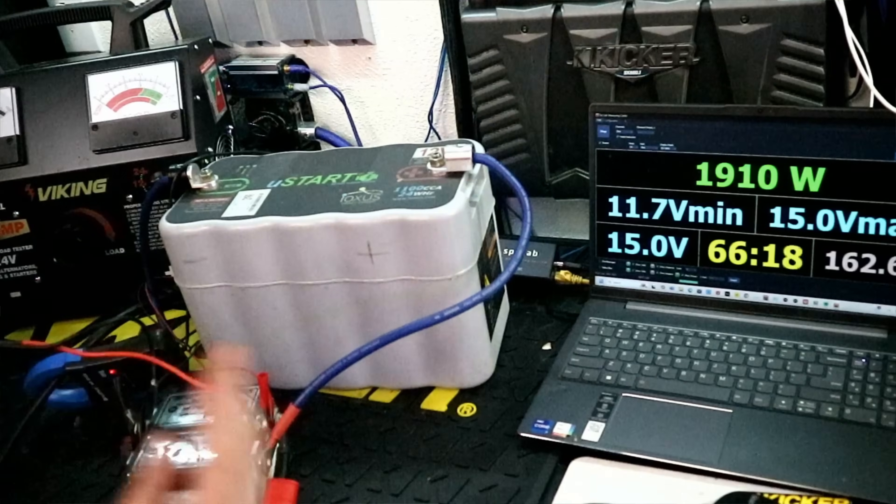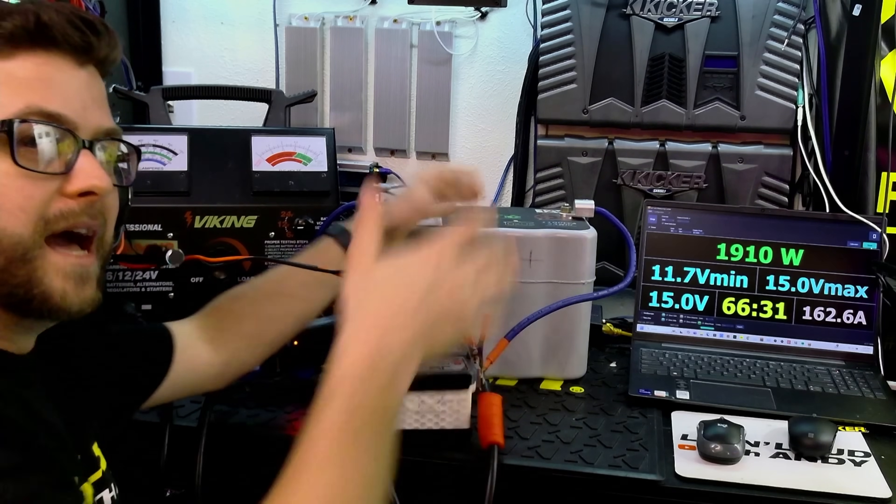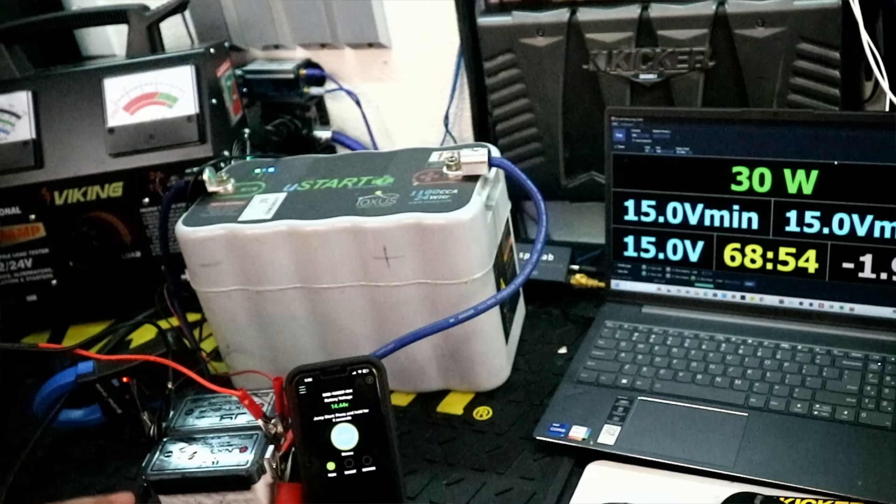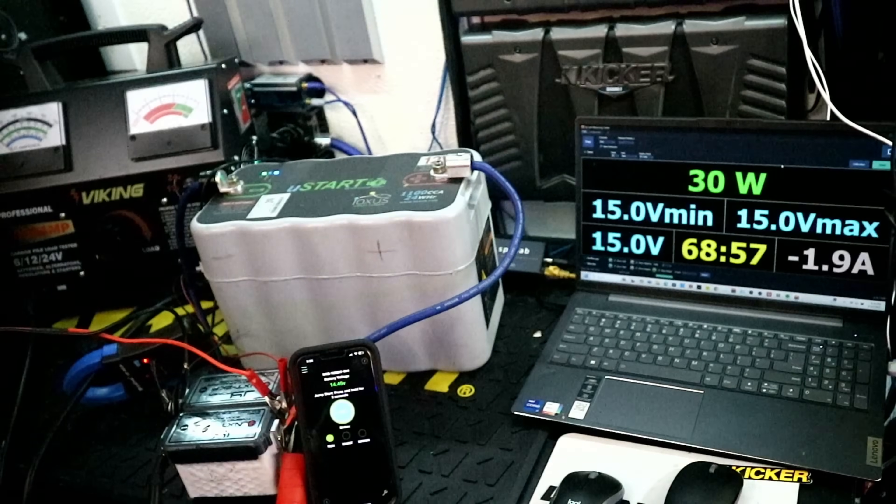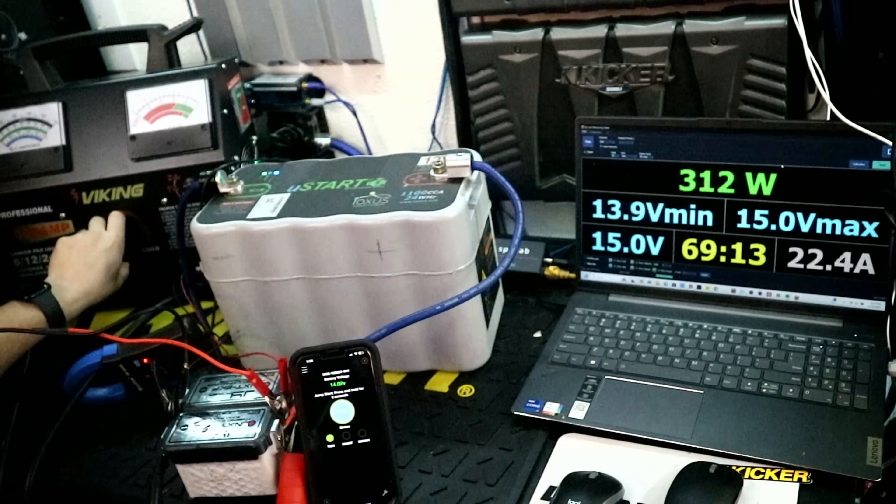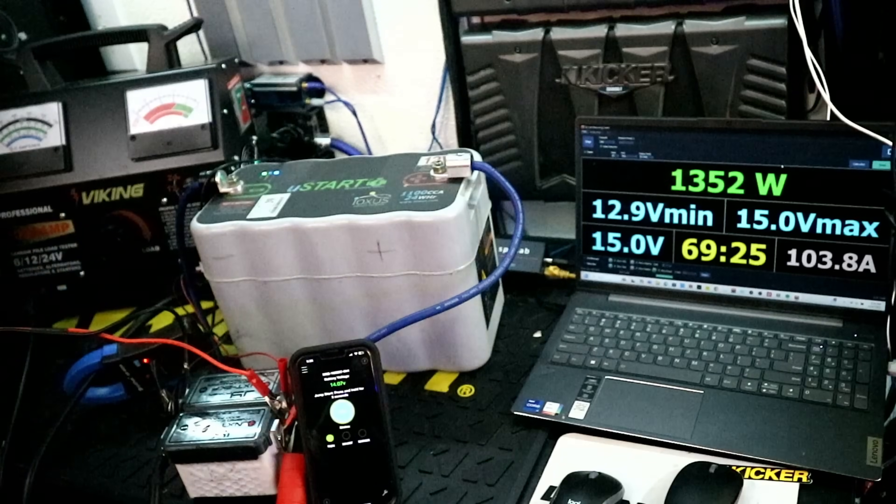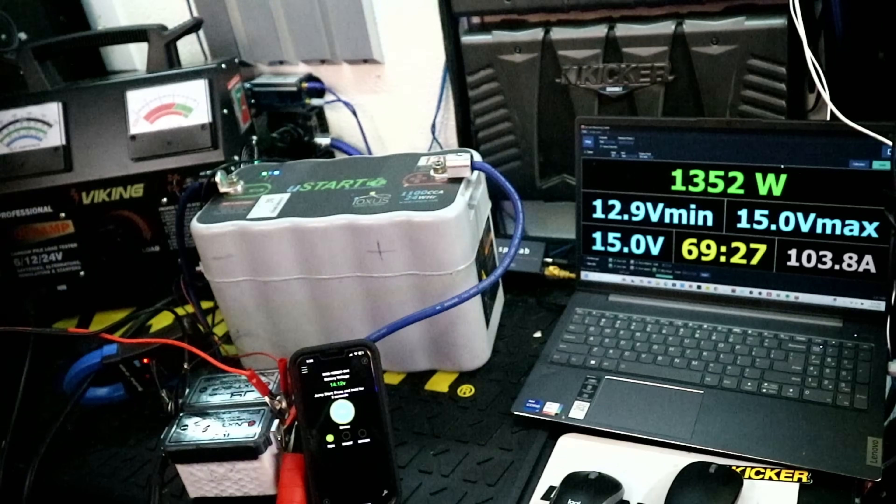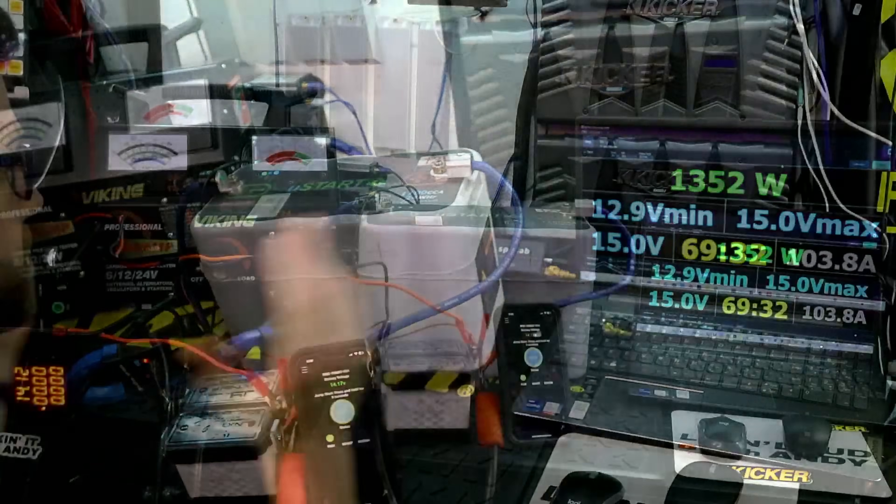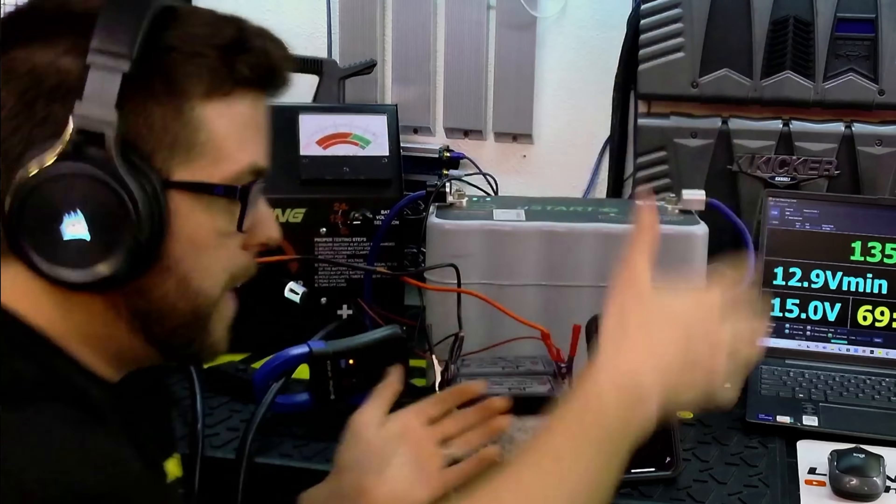But still, I wanted to get a control. Now that we have our numbers, 1,300 and 1,900, let's find out how much more this capacitor actually brings to the table. First test, 1,300 watts with 100 amps of current. Let's find out how much more of a difference it's making. All right, so we're at 12.9 volts, and we're making 1,352 watts. Honestly, that's not a huge jump, adding the huge ultra capacitor power bank over here.